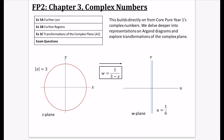Here's an example of what a transformation of the complex plane actually means. The Z-plane uses X and Y for the real and imaginary axes. If we have this locus — a circle where the modulus of Z is 3 — and we do this transformation W equals 1 over 3 minus Z, it changes this red circle into this blue straight line, where the equation is just U equals one sixth. Quite a strange thing that happens here.